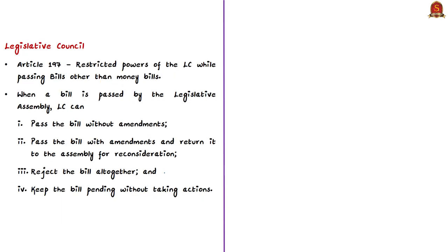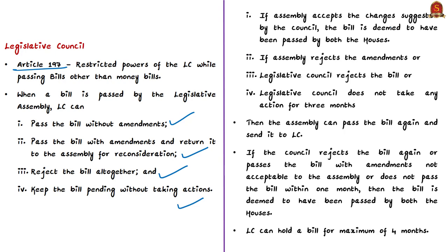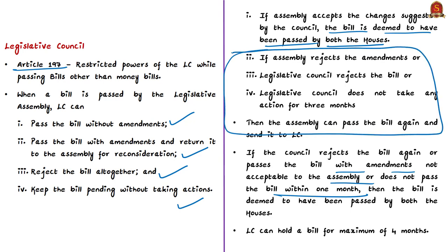Article 197 talks about the restricted powers of the legislative council with reference to passing bills other than money bills. When a bill is passed by the legislative assembly and transmitted to the council, the council has four alternatives: it may pass the bill without amendments; pass it with amendments and return it to the assembly; reject the bill altogether; or keep it without taking any action. If the assembly rejects the council's amendments, or if the council rejects or does not act within three months, the assembly may pass the bill again. If the council again rejects or does not pass within one month, the bill is deemed passed by both houses — meaning the council can hold a bill for a maximum of four months.